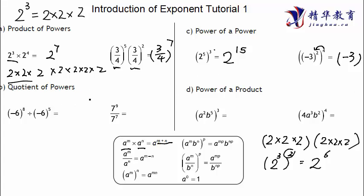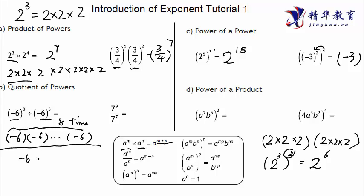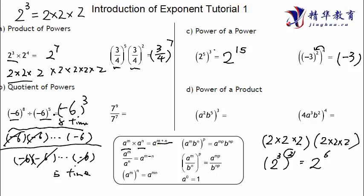Once we've covered those two rules, the next two are simpler. For the quotient rule: if product means plus, quotient means minus. Same base: negative 6 to the power of 8 divided by negative 6 to the power of 5. Negative 6 times itself 8 times divided by negative 6 times itself 5 times — after canceling, 3 remain on top. So it's negative 6 to the power of 3, because power divided by power equals power subtraction: 8 minus 5. Similarly, 7 to the power of 9 divided by 7 to the power of 7 equals 7 to the power of 9 minus 7, which is 7 to the power of 2.